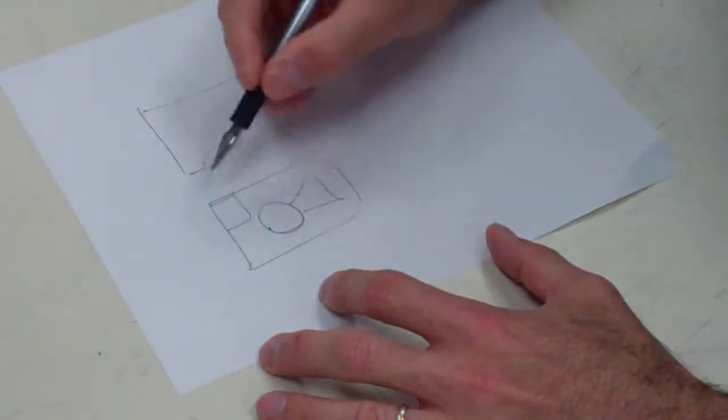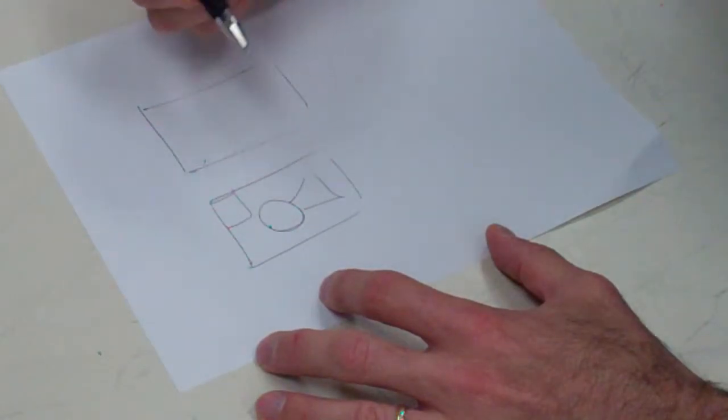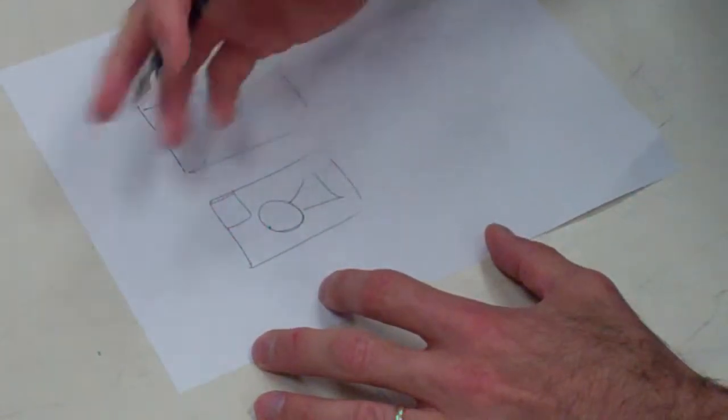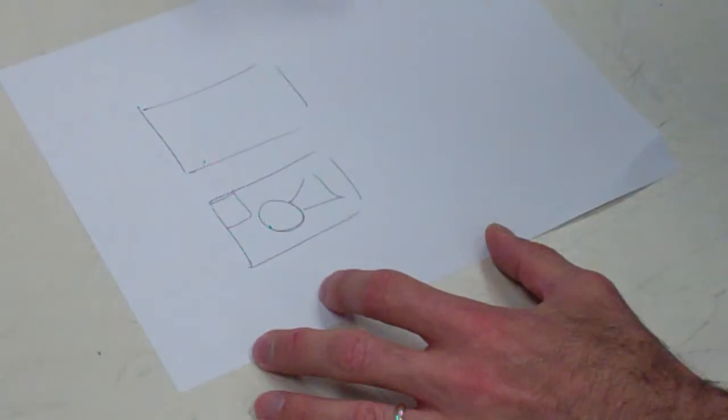And then based on these little thumbnails, you can color them in. And by coloring them in, it takes a lot less time to color a small thumbnail as opposed to an entire page.